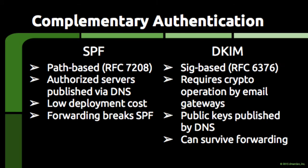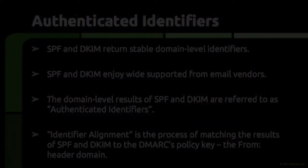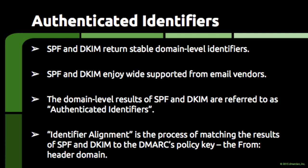SPF and DKIM are both technologies that produce stable, domain-level identifiers. They are freely available technical specifications that have seen wide implementation across many different email vendors. DMARC only cares about the results they produce, and if those results have anything to do with the domain found in the FROM header. The results produced by SPF and DKIM are referred to as authenticated identifiers in the world of DMARC.